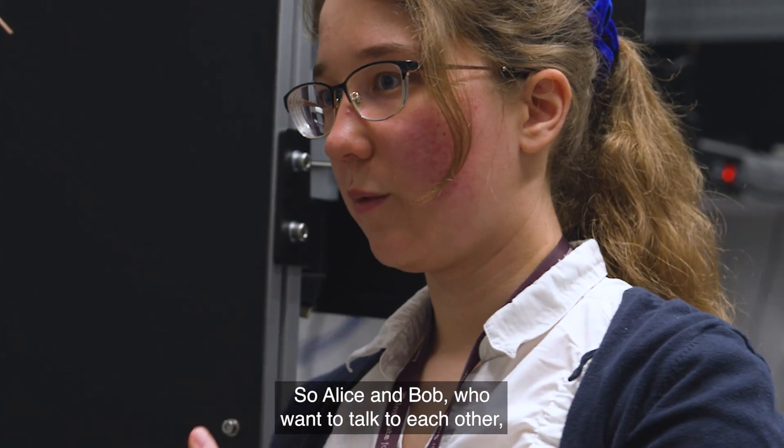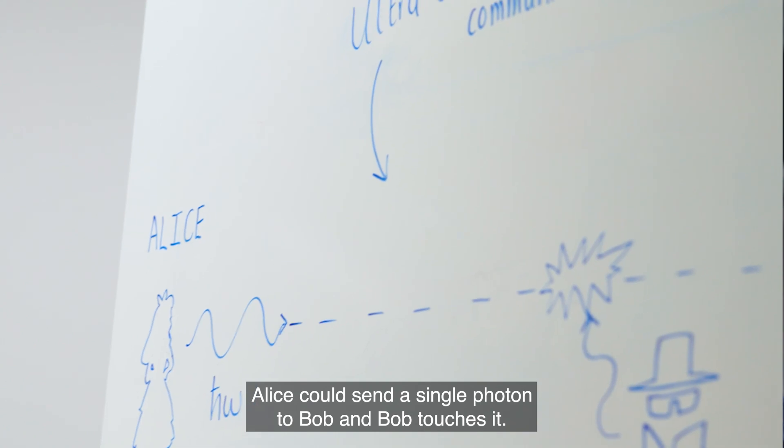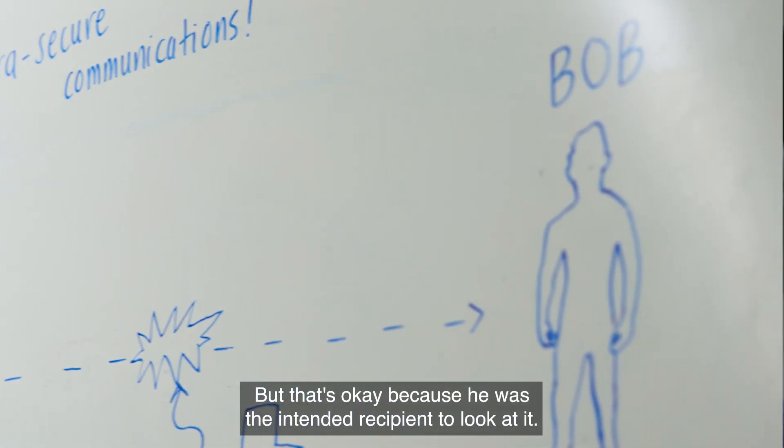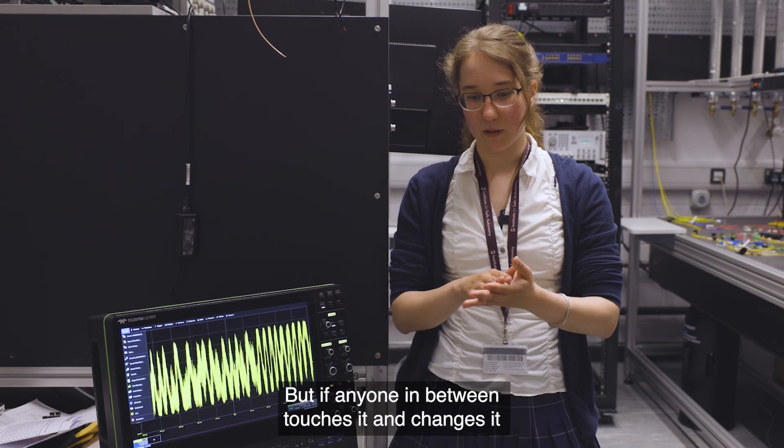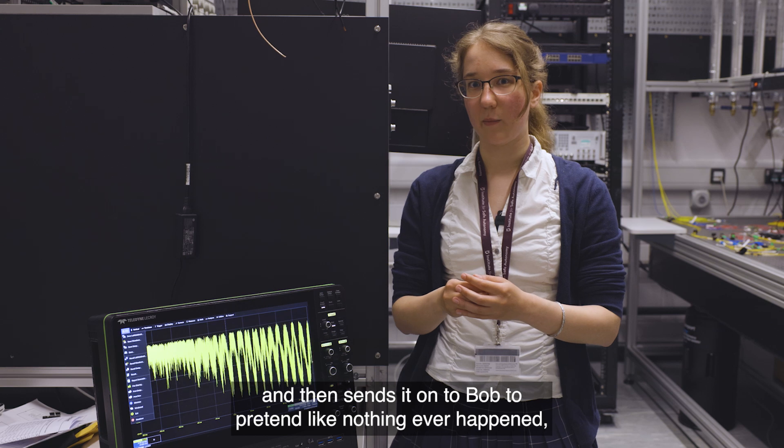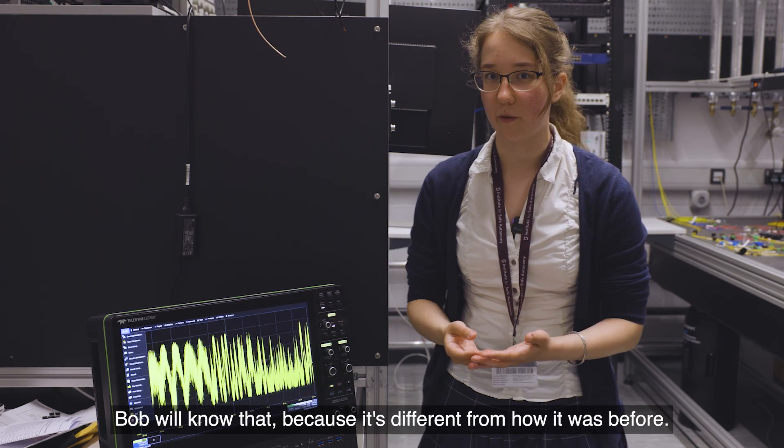So Alice and Bob who want to talk to each other, Alice could send a single photon to Bob and Bob touches it. Then it changes, but that's okay because he was the intended recipient. But if anyone in between touches it and changes it and then sends it on to Bob to pretend like nothing ever happened, Bob will know that because it's different from how it was before.